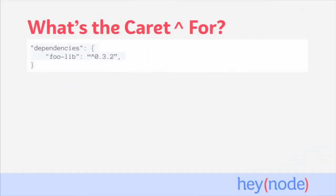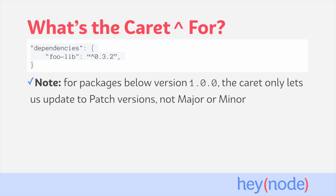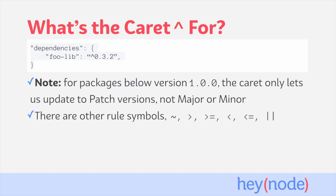For packages below version 1.0.0 — like a version number of 0.3.2, for example — the caret symbol will only let us update to new patch versions, not major or minor versions. NPM has started to default to version numbers of 1.0.0, so this is less of a concern, but still an important edge case to understand.